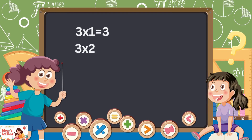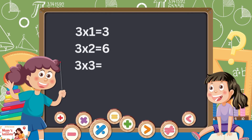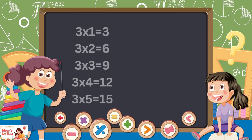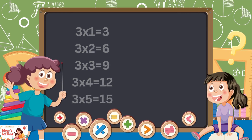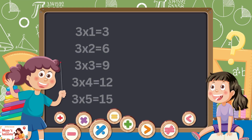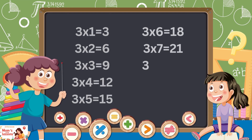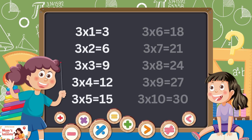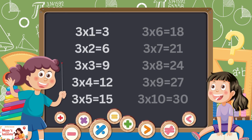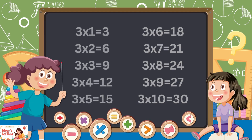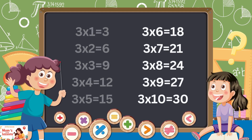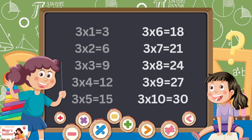Let's repeat, children. Three ones are three, three twos are six, three threes are nine, three fours are twelve, three fives are fifteen, three sixes are eighteen, three sevens are twenty-one, three eights are twenty-four, three nines are twenty-seven, three tens are thirty.